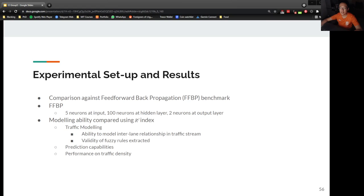The experiments to assess the modelling ability of POPFNN-TVR are organised into two parts. First is their ability to model inter-lane relationship in a traffic stream, and second is to assess the validity of fuzzy rules extracted by POPFNN-TVR during the modelling process. First, a comparison between FFBP and POPFNN-TVR is done, based on the R-square index to ensure that the set of fuzzy rules extracted from the system is meaningful and suitable for further experimentation.